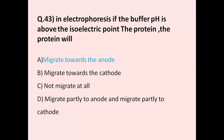Question number 43: In electrophoresis, if the buffer pH is above the isoelectric point, the protein will — option A migrate towards the anode, option B migrate towards the cathode, option C not migrate at all, option D migrate partially to anode and partially to cathode. The correct answer is migrate towards the anode. Anode is a positive charge and cathode is negative. In electrophoresis, negative charge attracts to the positive charge, so the correct answer is migrate towards the anode.